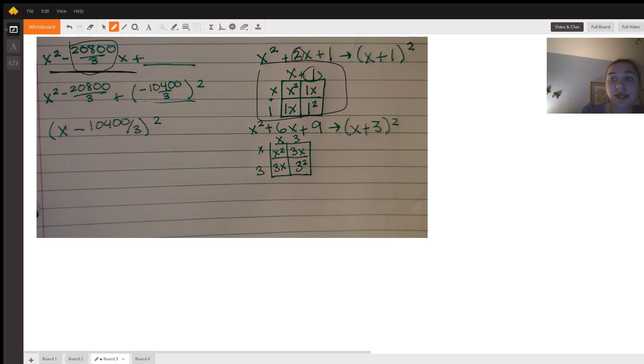Well, negative 10,400 over 3 squared. So that's going to give us the whole thing, which factored as a square is going to be this. Okay. So now we have that. We can plug that in.